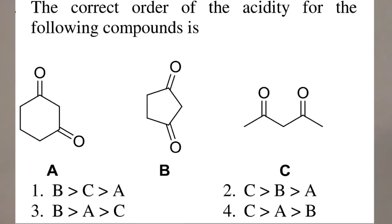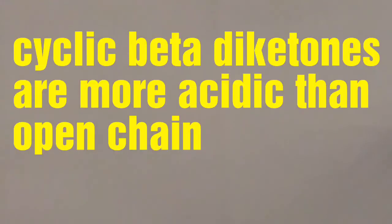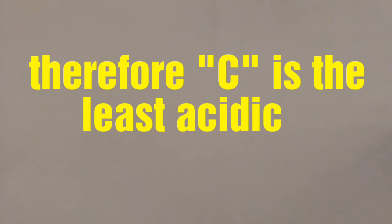Second question. The correct order of acidity is... cyclic beta diketones are more acidic than the open chain. That means molecule C is the least acidic.